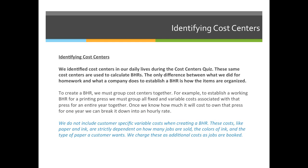For our homework last week, we identified our daily operating costs — everything we purchased that day — and determined if we were profitable. A company will group costs into different areas: run cost centers, binding cost centers, and pre-press cost centers, giving a different hourly rate for different areas. To create a BHR, we must group cost centers together. To establish a working BHR for a printing press, you must group all fixed and variable costs associated with that press for an entire year. Once we know how much it will cost to own the press for one year, we can break it down into an hourly rate.